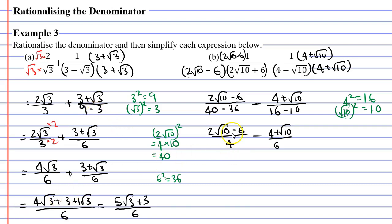We want to make the denominators the same. Most people would try to make both denominators twelve, doubling the six and tripling the four. Instead I'm going to start by simplifying the first fraction. I notice I have even numbers: a two, a six, and a four in the numerator and denominator. When they're all even, I can divide them all by two.